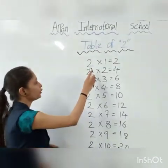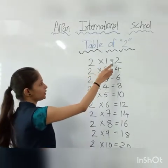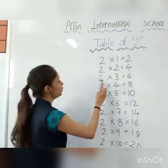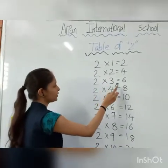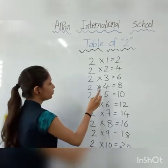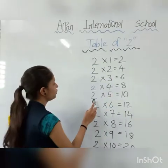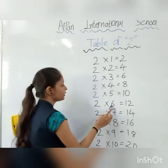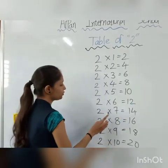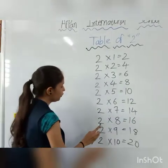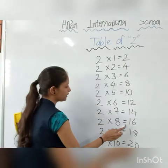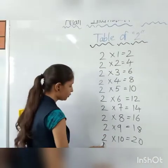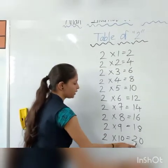Now we sit on whiteboard. 2, 1's are 2. 2, 2's are 4. 2, 3's are 6. 2, 4's are 8. 2, 5's are 10. 2, 6's are 12. 2, 7's are 14. 2, 8's are 16. 2, 9's are 18. 2, 10's are 20.